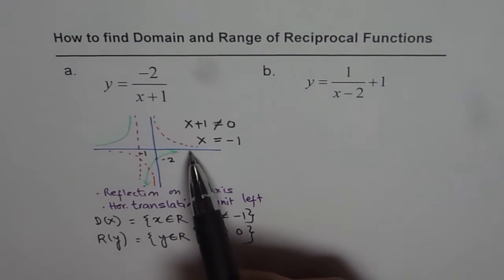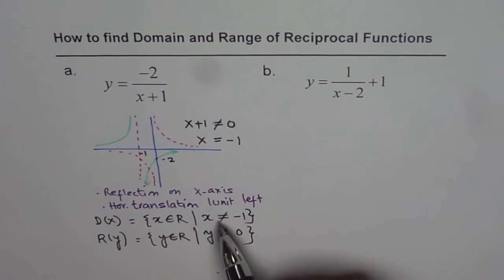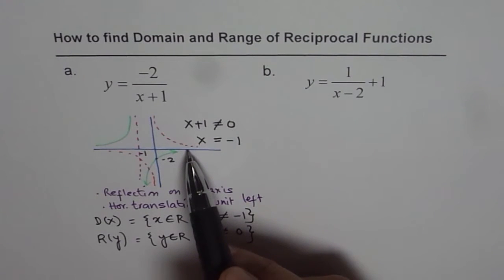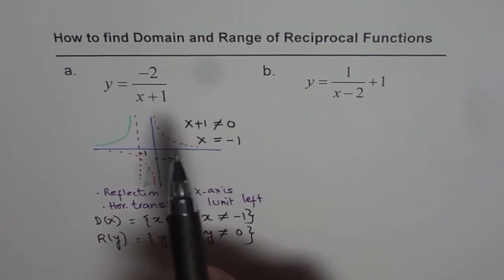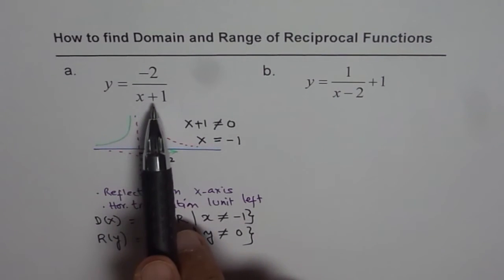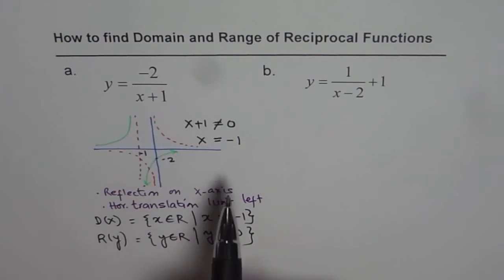Originally, domain and range is all real numbers, but x not equal to 0 is domain, and y not equal to 0 is the range. Since the function gets translated horizontally, only change is in the domain of the function, but not in the range of the function. That is another way of looking into it. We will apply this method here for the second example.